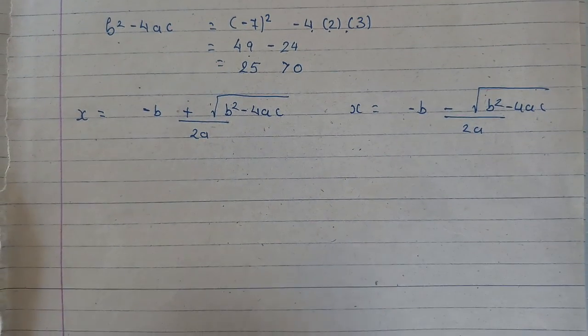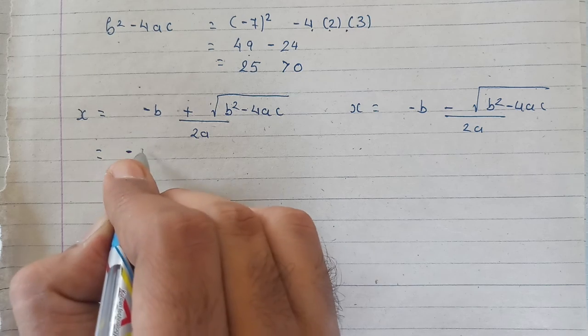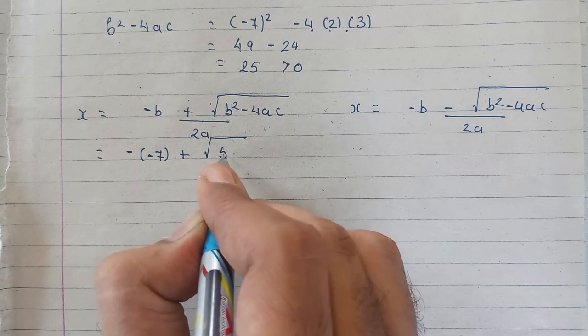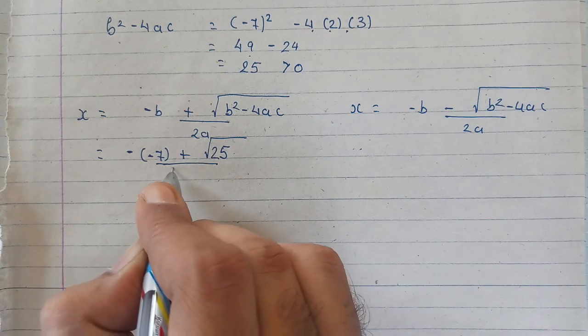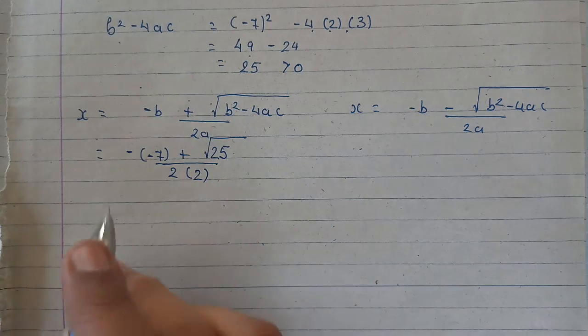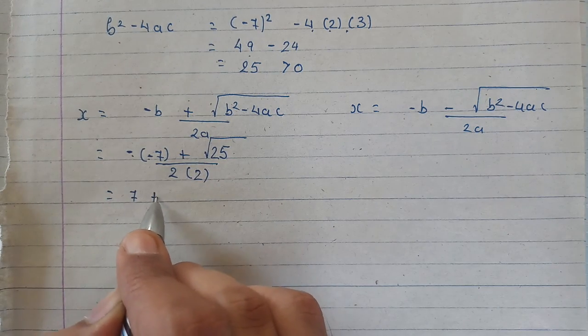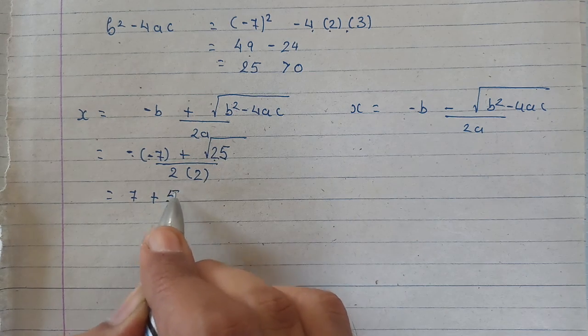Now, we'll put the values. Minus b ki jaga pe, minus 7 plus under root b square minus 4ac is 25 upon 2 into a ki jaga pe 2. Minus and minus become plus 7 plus, 25 ka root is 5.